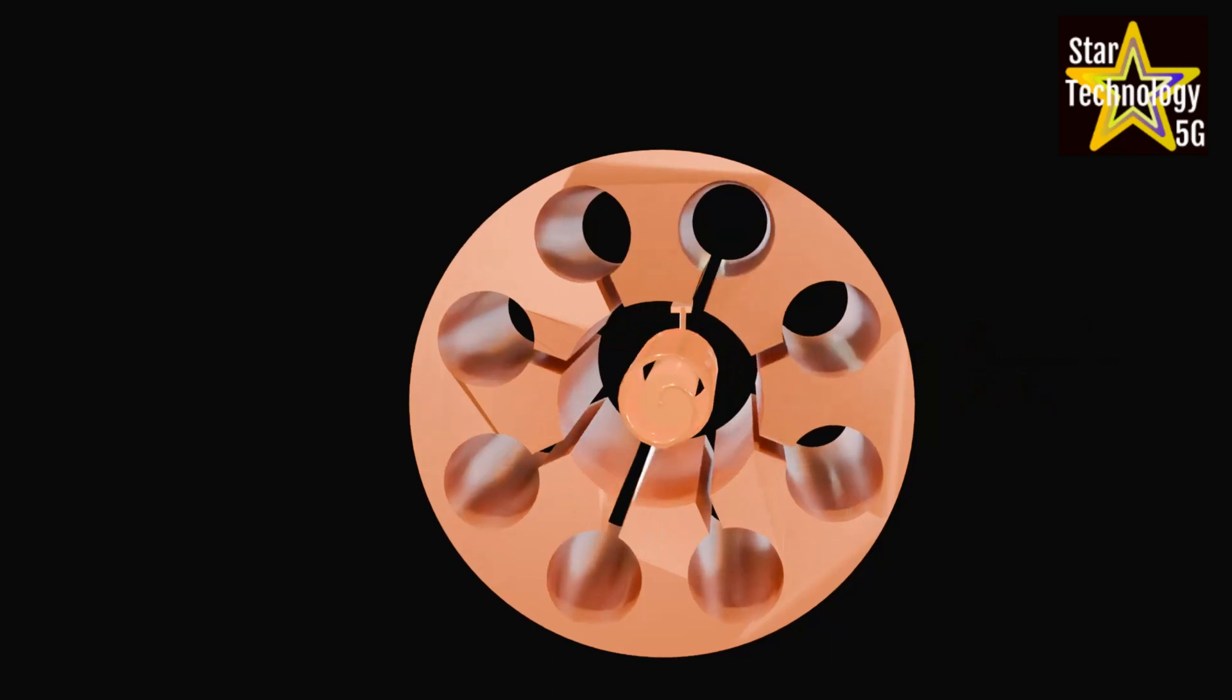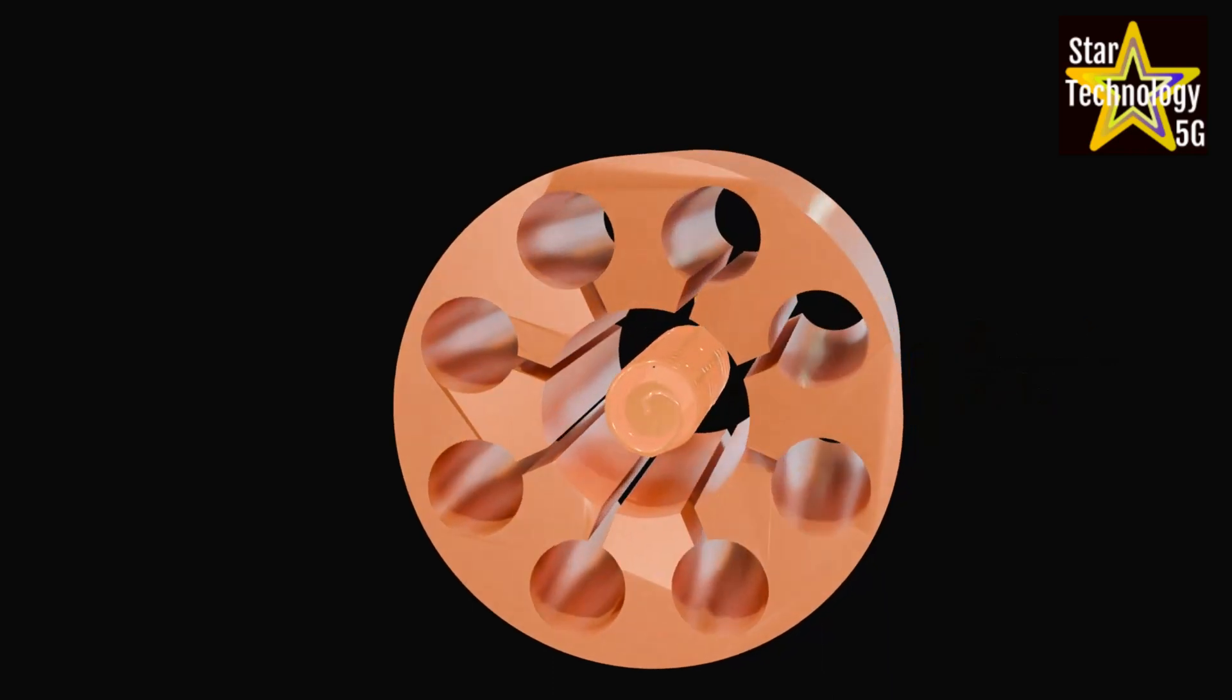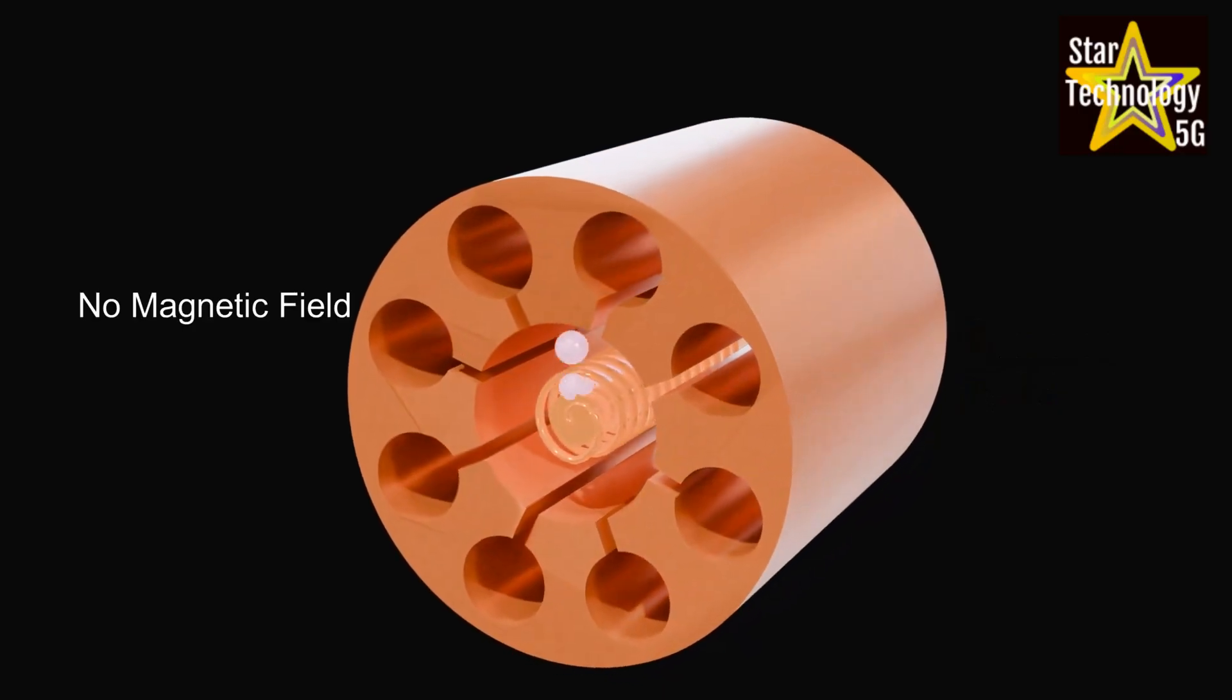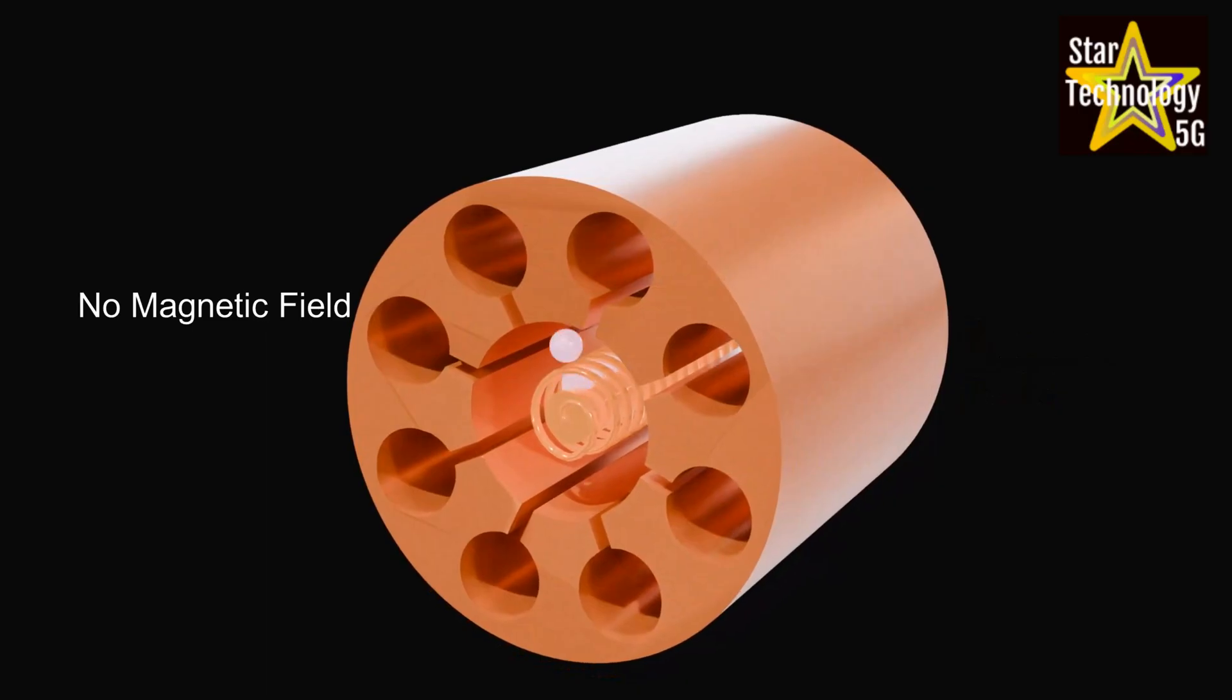The cathode of a magnetron provides the electrons through which the mechanism of energy transfer is accomplished. When no magnetic field exists, heating the cathode results in a uniform and direct movement of the electron from the cathode to the anode block.